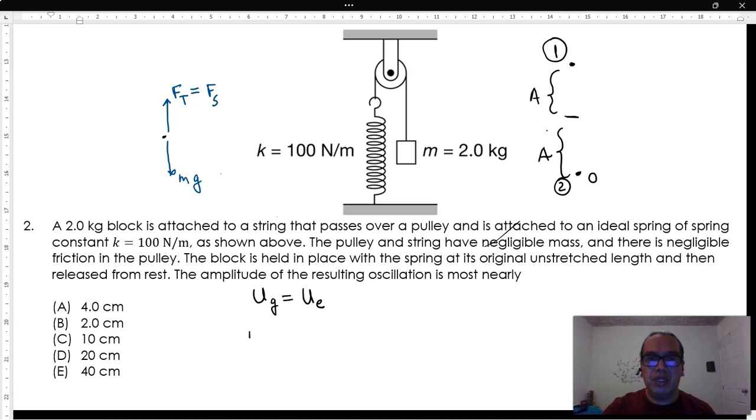This means that at position 1, Mg times 2A equals one-half k times 2A squared at position 2.